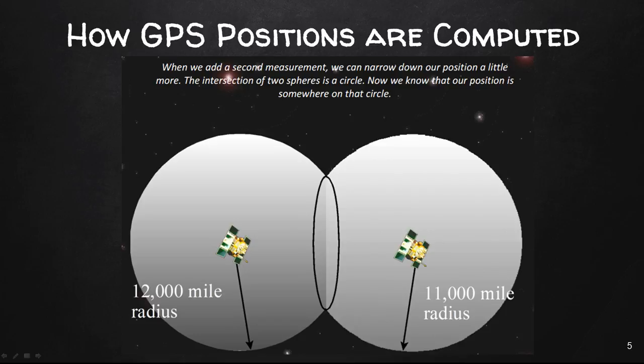When we add a second measurement, we can now narrow down our position a little more. The intersection of two spheres is a circle. Now we know that our position is somewhere on that circle, somewhere in there where that black circle in the middle of the diagram is.